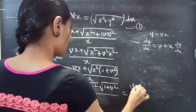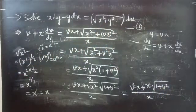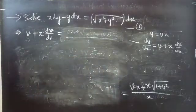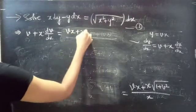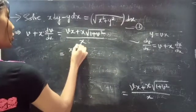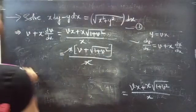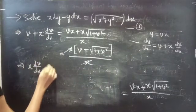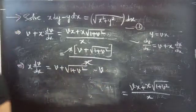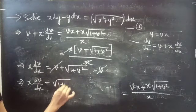So we have v plus x dv/dx equals to vx plus x times square root of 1 plus v square, divided by x. Taking x common from the numerator gives x times (v plus square root of 1 plus v square), divided by x. Here x gets cancelled. Taking v to the RHS, plus v and minus v cancel, giving x dv/dx equals to square root of 1 plus v square.